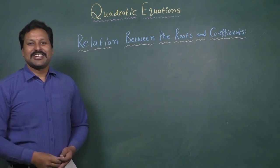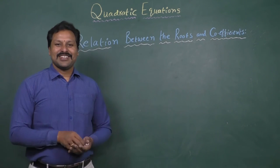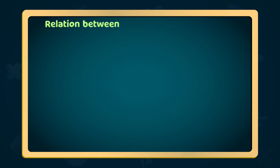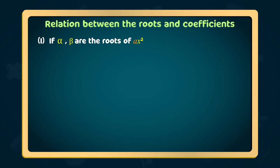Let us learn this topic, relation between the roots and coefficients. If α, β are the roots of Ax² + Bx + C = 0.